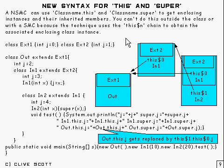You can't do this outside the class, or with a static member class, because there is no enclosing instance in either of those cases. What the technique uses is `this$N` to chain up to the appropriate enclosing class instance, and that's what you use in `className.this` and `className.super`.